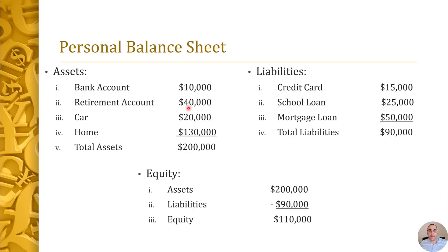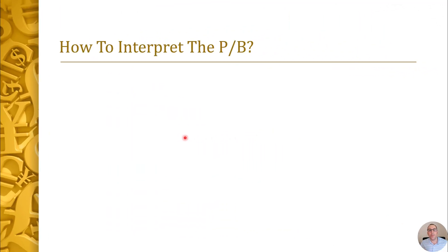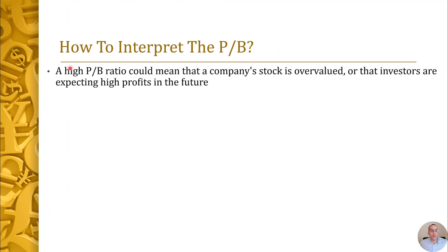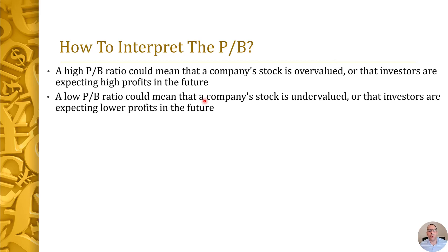Now that we've talked about the B — the book value part of the price-to-book ratio — let's go back to learning how to interpret it. A high price-to-book could mean the stock is overvalued, or it could mean investors are expecting big growth in the future. A low price-to-book could mean the stock is undervalued, or that investors fear the company may be in trouble.